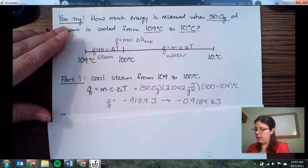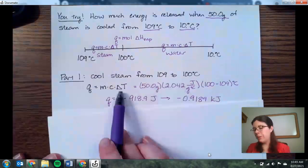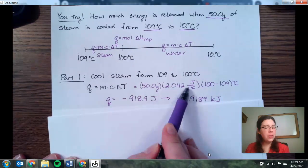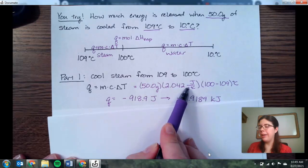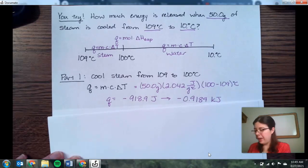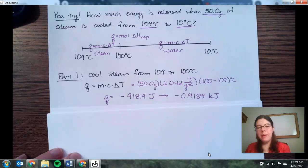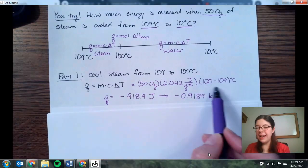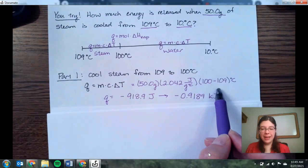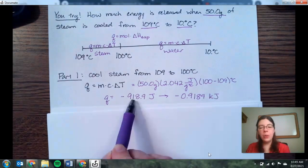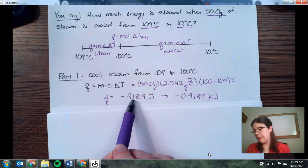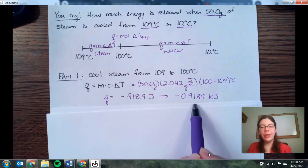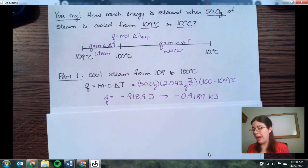So for part one, we are cooling our steam down, so we're going to use that Q equals MCAT equation. Make sure, really important, that you're using the specific heat of steam. Do not use the specific heat of water because that will give you the wrong value. One thing to keep in mind with the temperature change, it is final minus initial. So since we're cooling things down, that ends up with a negative nine for the temperature change. Overall, we have a negative Q because energy is exiting our system. So that is negative 918.9 joules, or if we convert that into kilojoules, negative 0.9189.